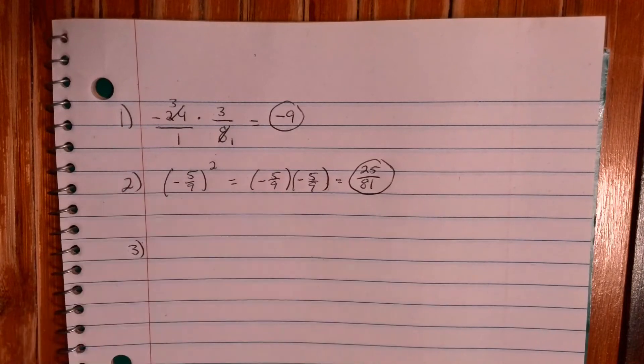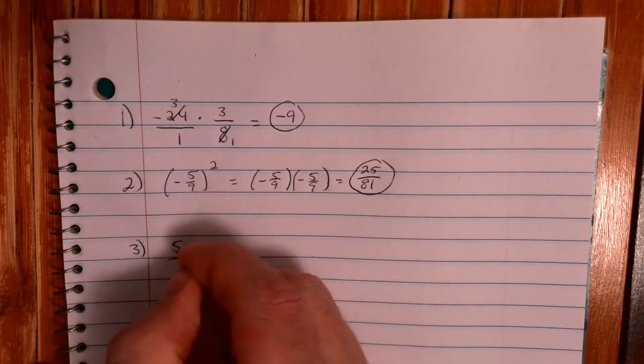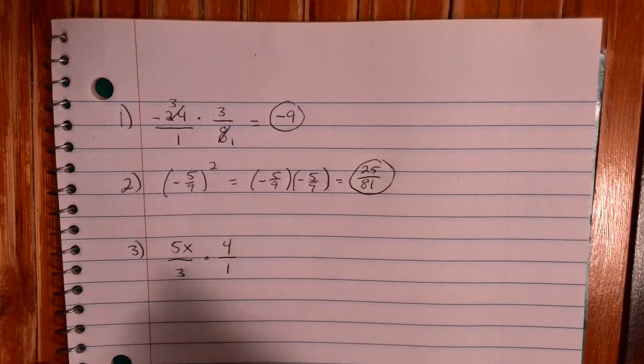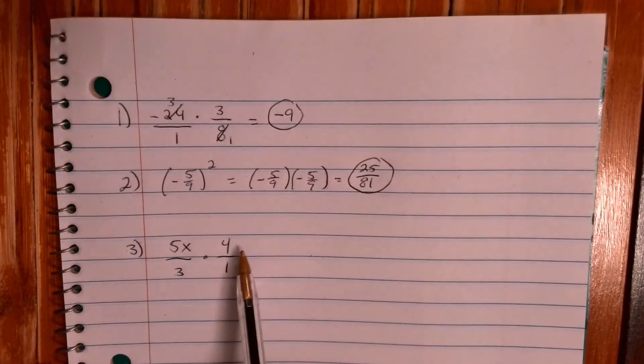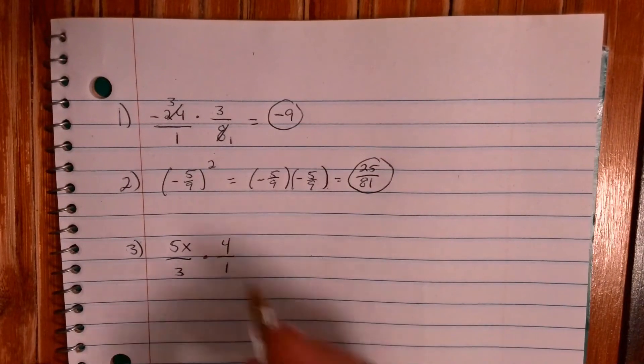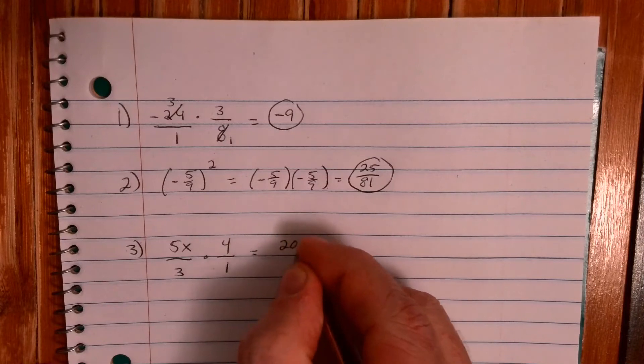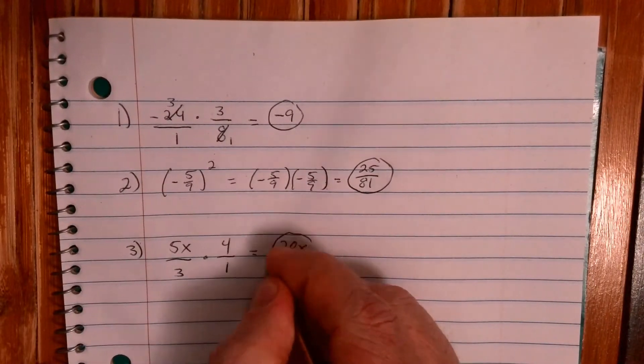Third one, we only got five to do, so it's going to be a quick one today. This one we're going to have a variable: 5x over 3 times 4. Okay, so let's just make it 4 over 1. I look to cancel, still nothing I can cancel. Nothing goes into 3 and 4 other than 1, nothing goes into 5x and 1 other than 1. So we just multiply straight across and we just make that 5x times 4, something you should know is 20x, and that is 20x over 3 and we actually leave it like this. We don't make that six and two-thirds x, so we're good with 20x over 3.